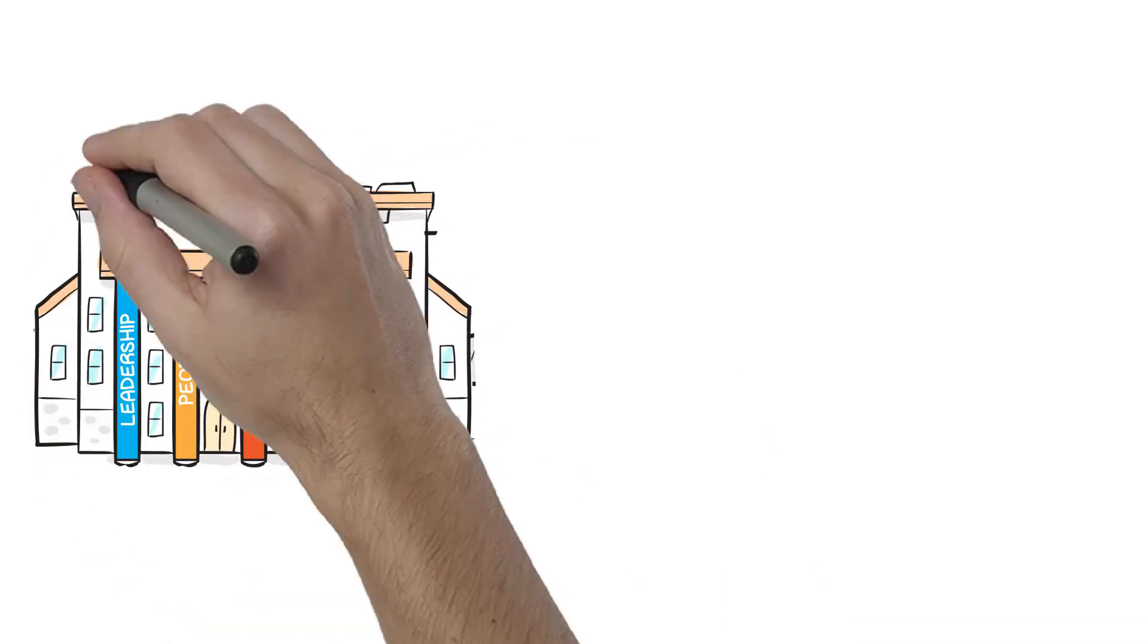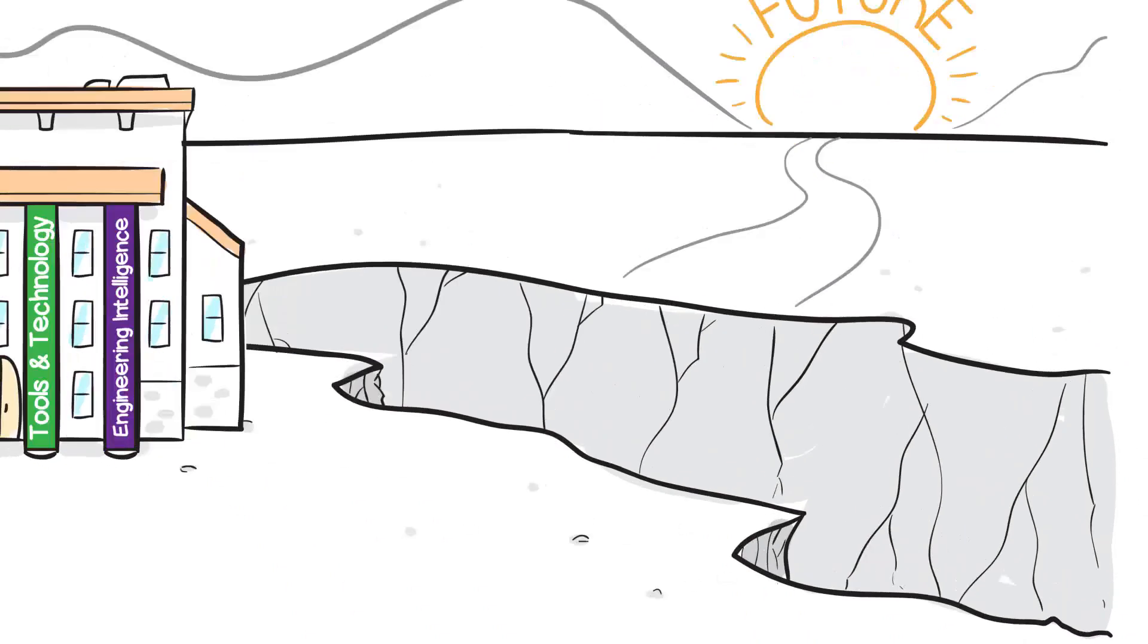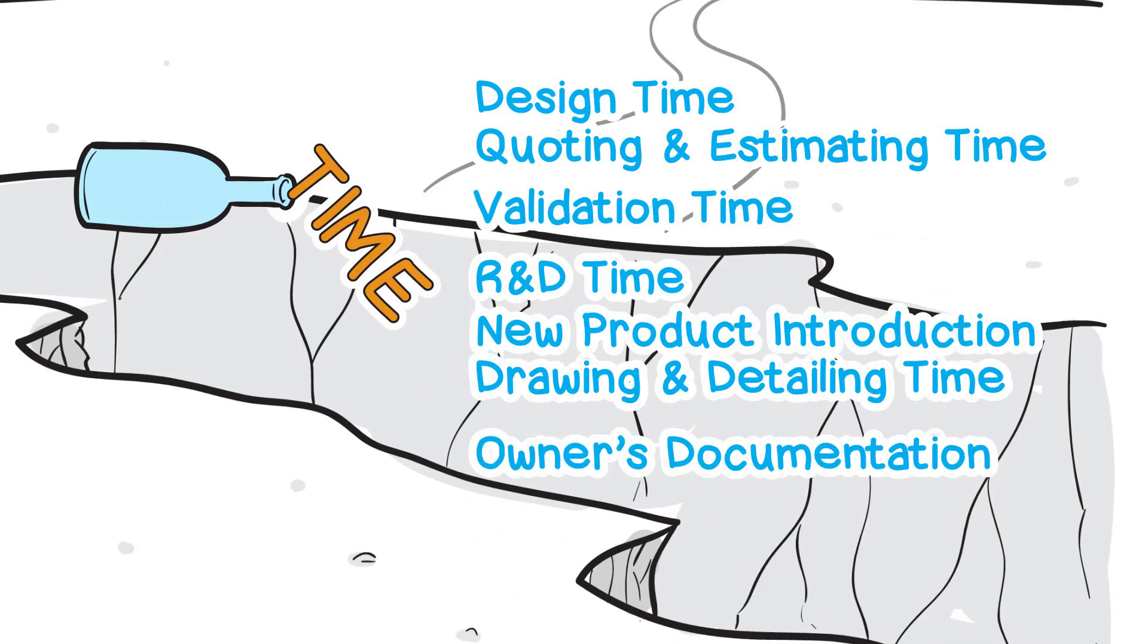Going through this process allows manufacturing companies to look internally to identify the current gaps they may have within each pillar, which can keep them from reaching their overall success and performance goals and reaching their vision.